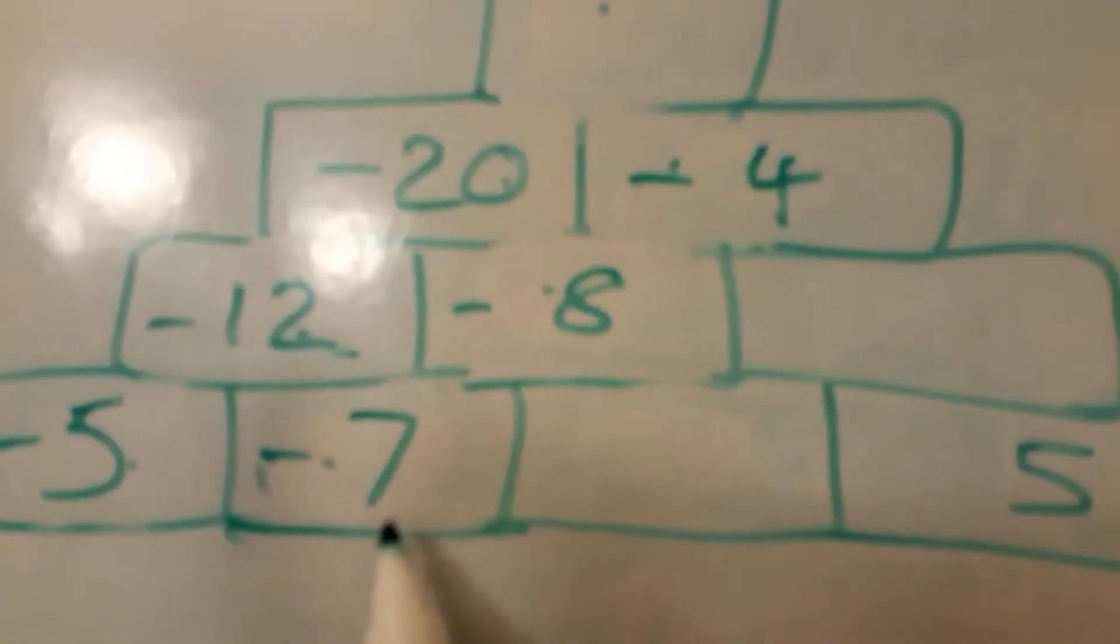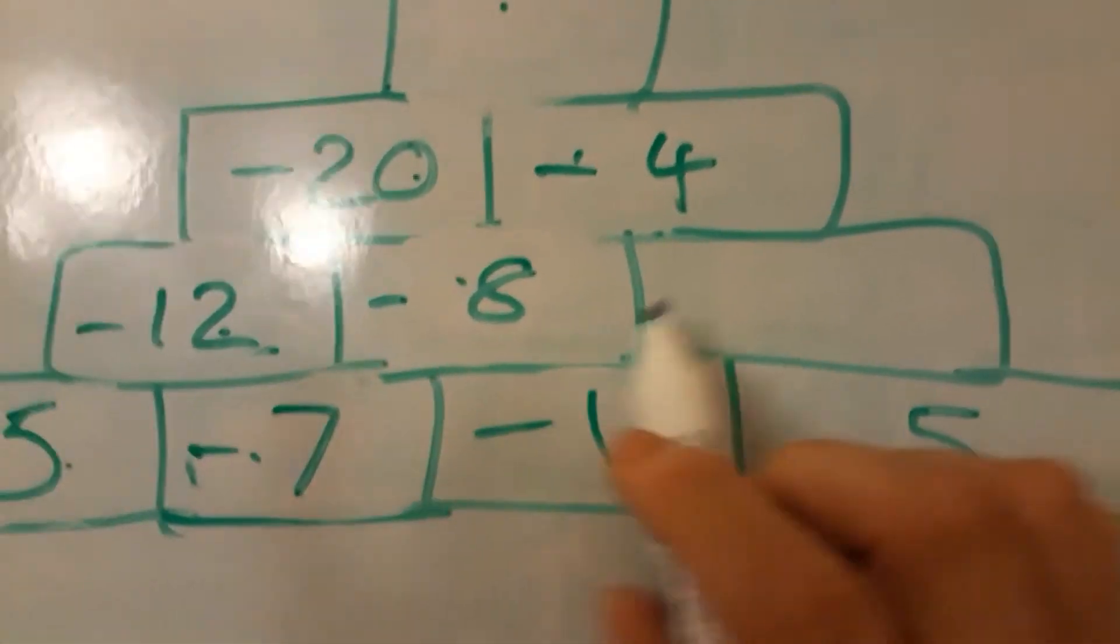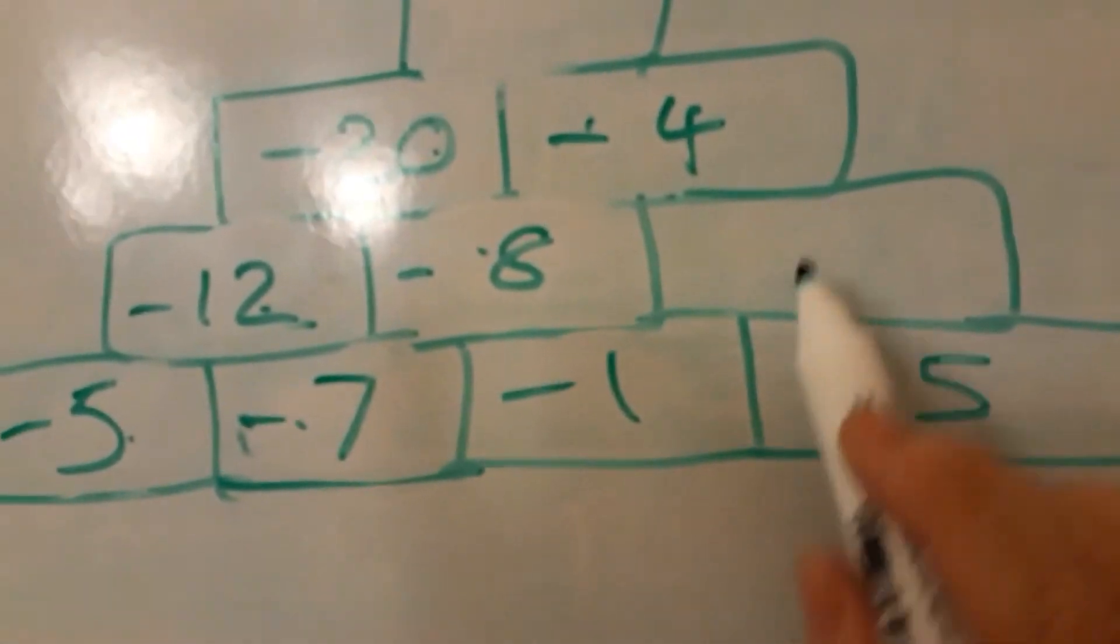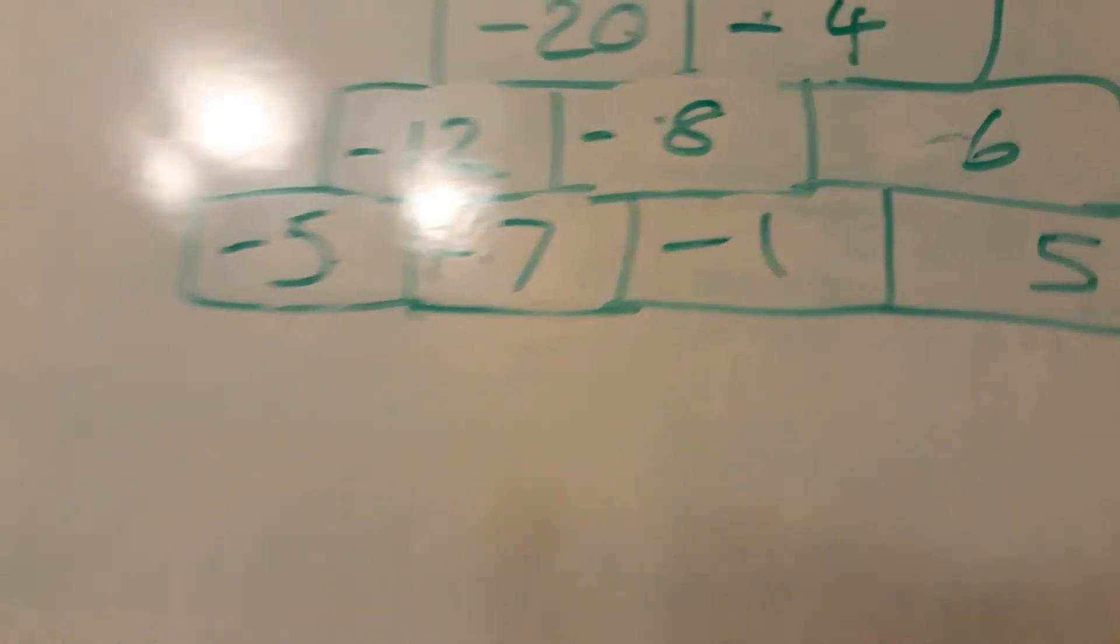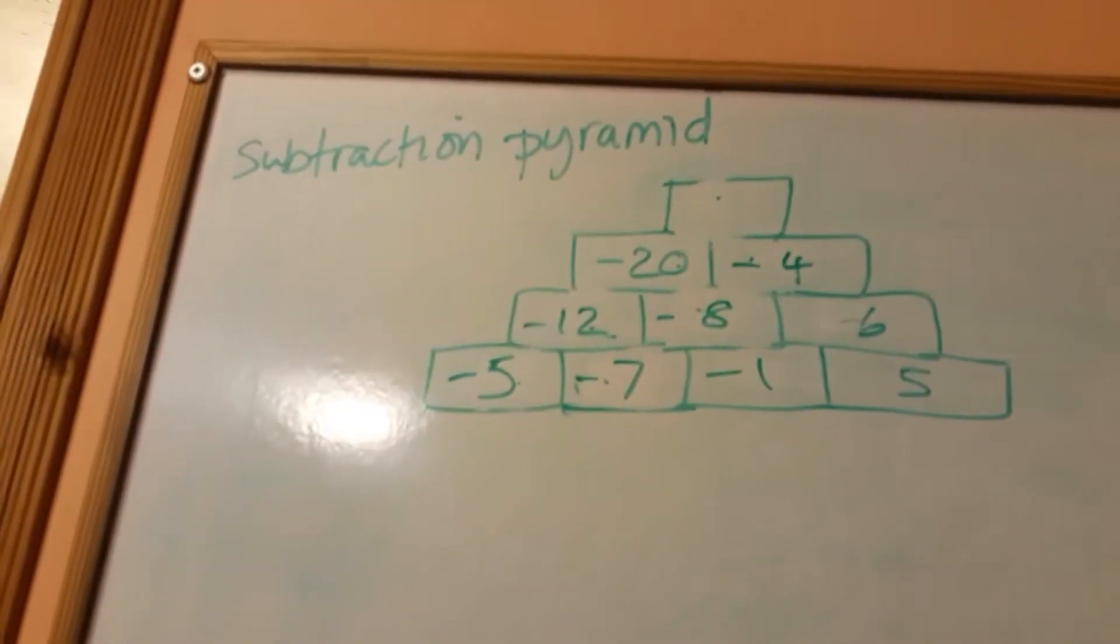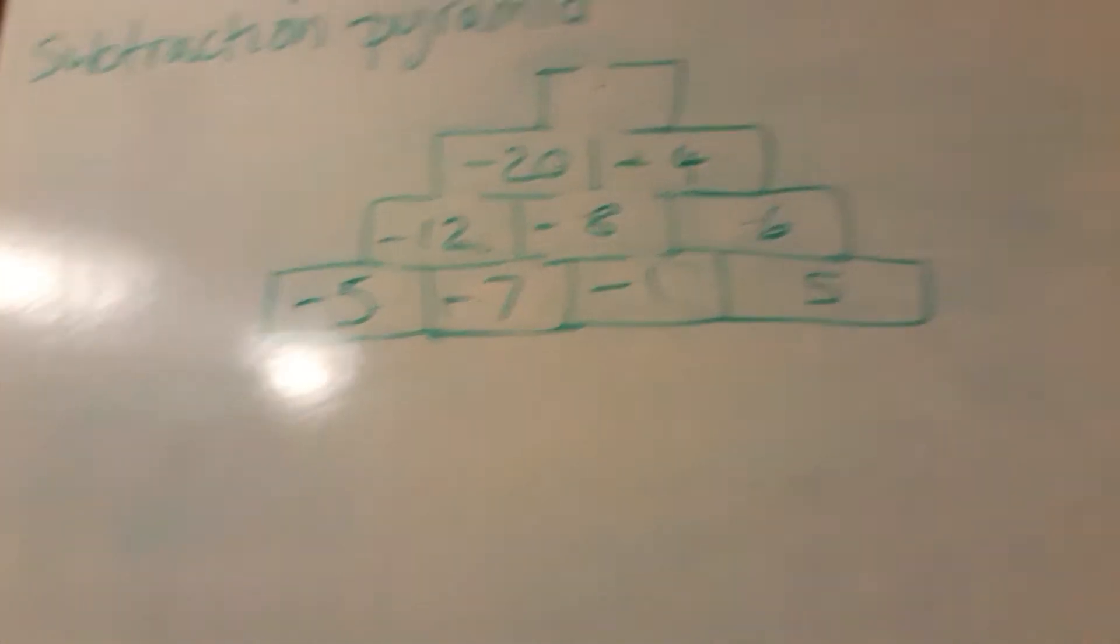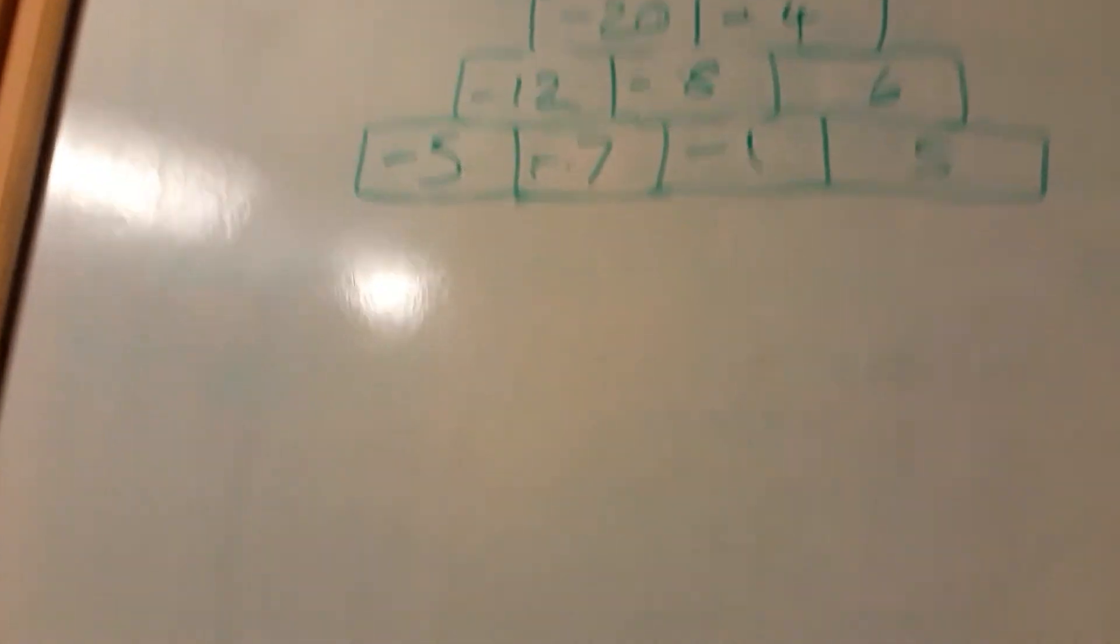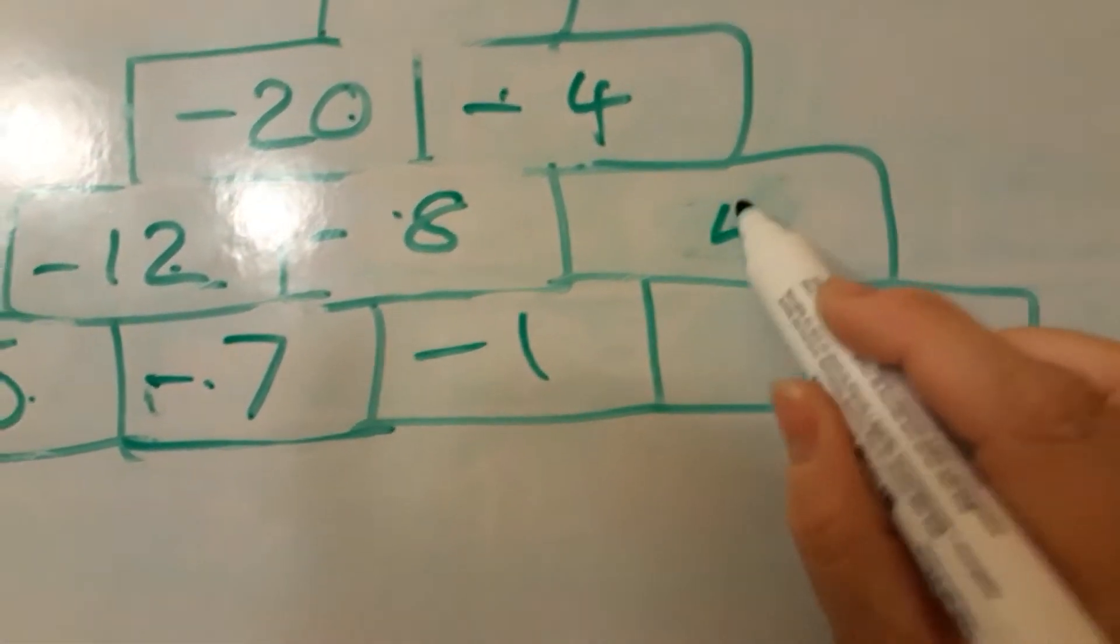And this one, and this one is minus 1. And then these two, minus 6, or is it just 6? I think... Oh sorry, I'm adding when it's supposed to be subtraction. So yeah, that's a 4.